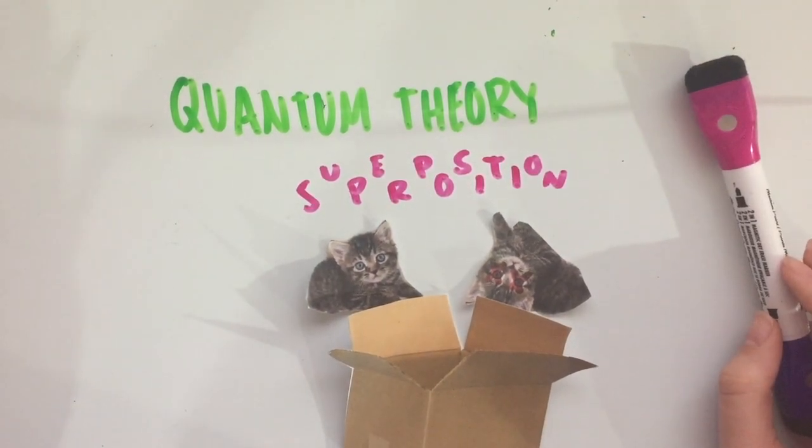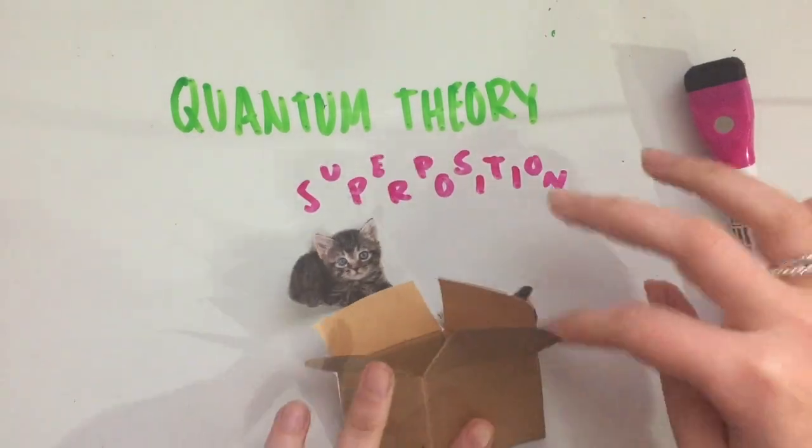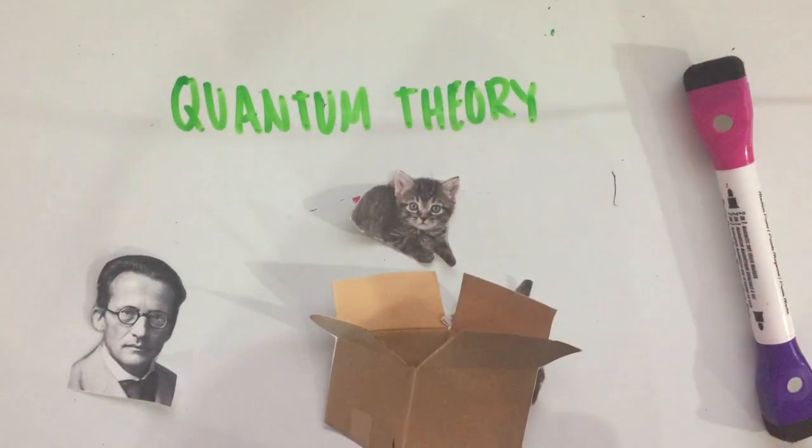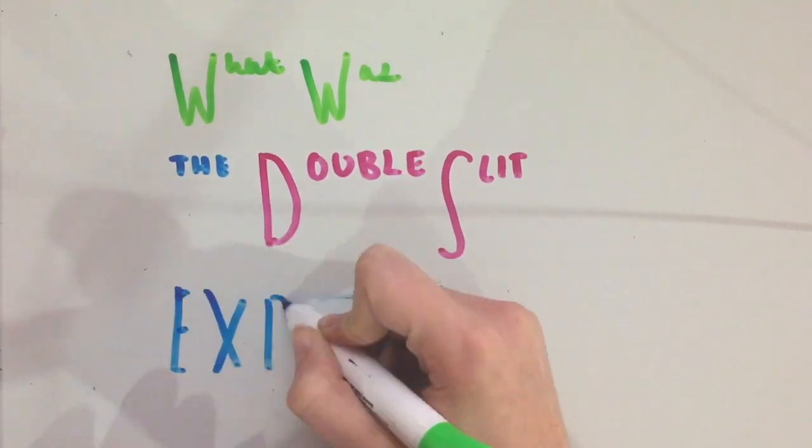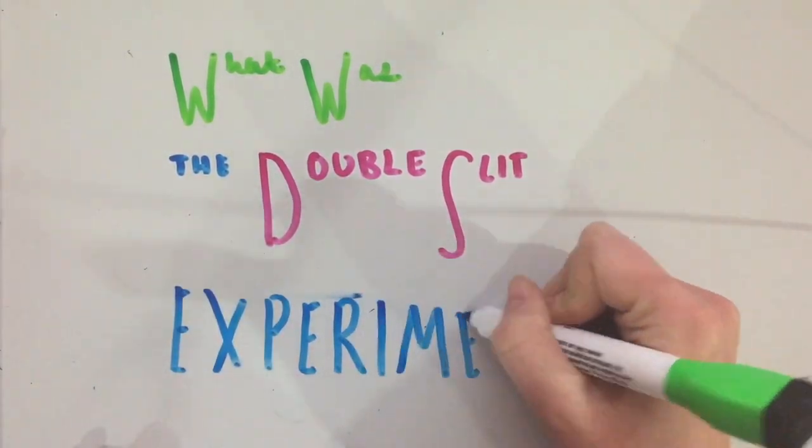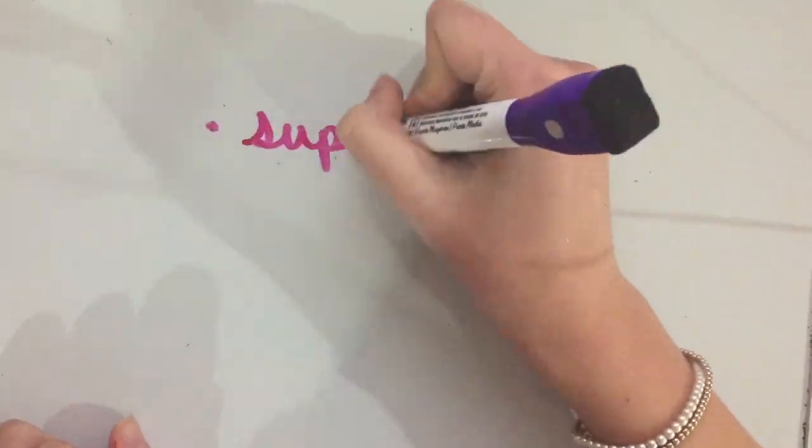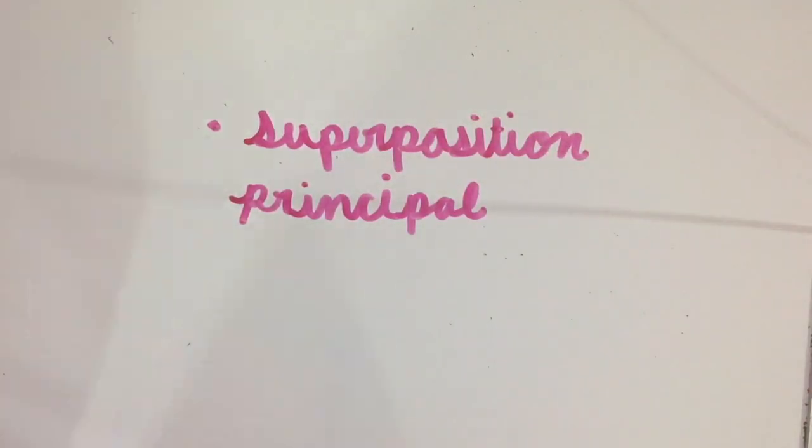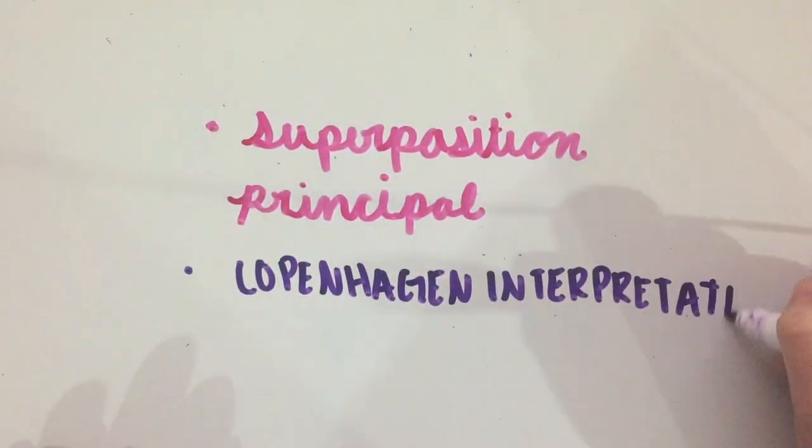And only upon us opening the box or observing the particle, it was forced to choose just one state, dead or alive. For clarity, I highly suggest you check out my video on the double slit experiment. Here, I go more in depth about the Superposition Principle as well as the Copenhagen Interpretation in action.